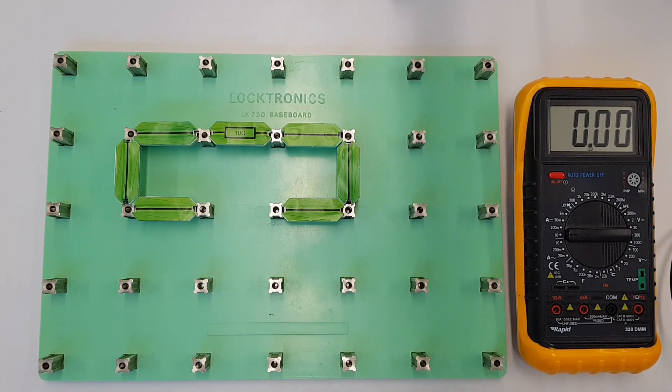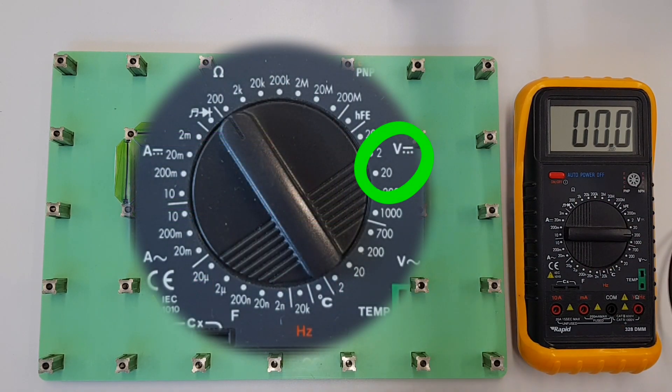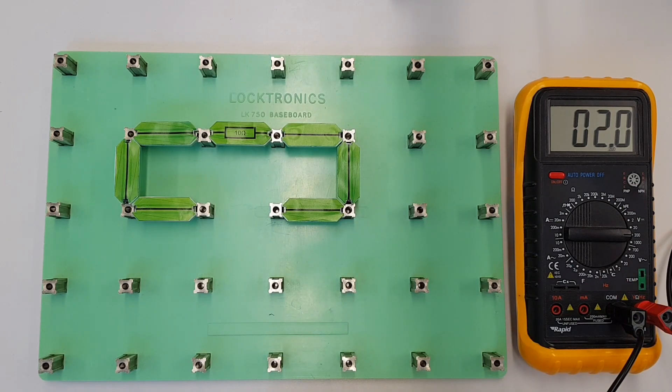So I'm going to set this to measure volts and I'm going to test and make sure that I've got about 2 volts coming out of there. That's great, so I've got 2 volts coming out of my power supply.